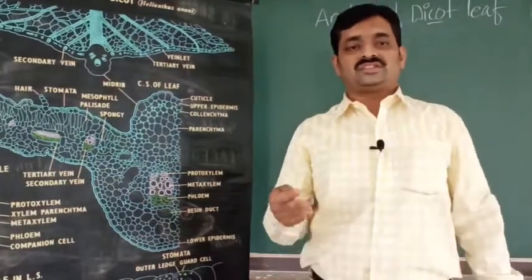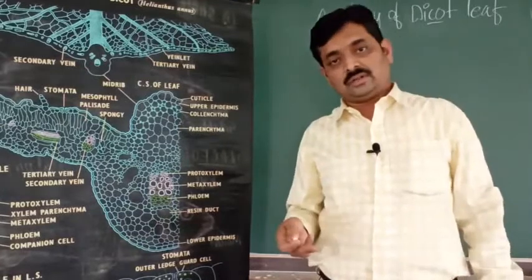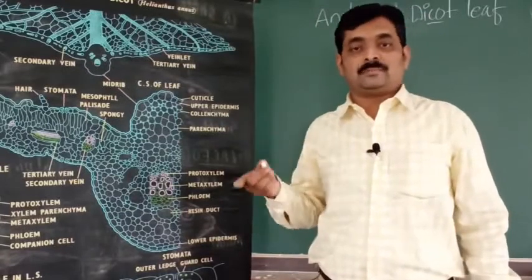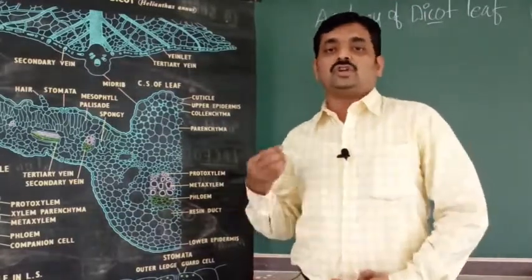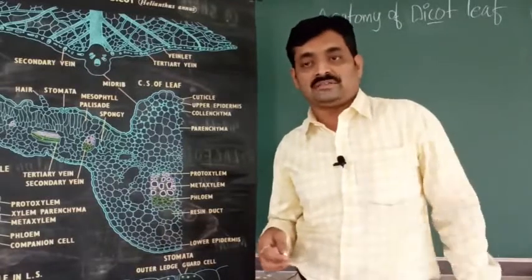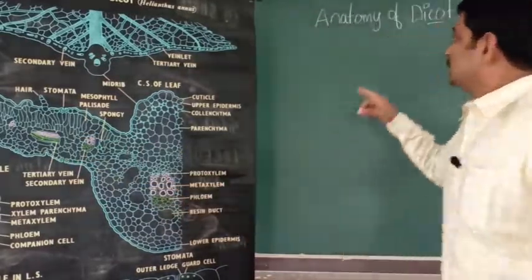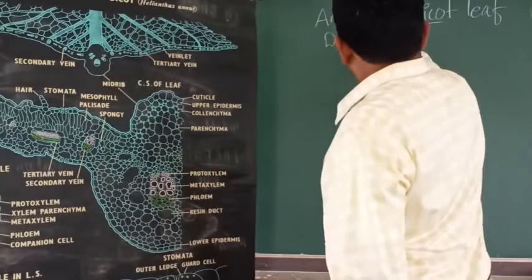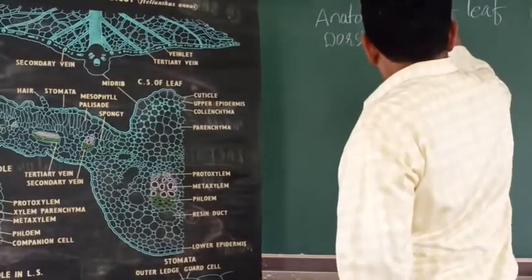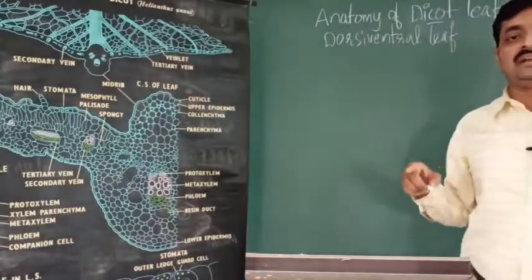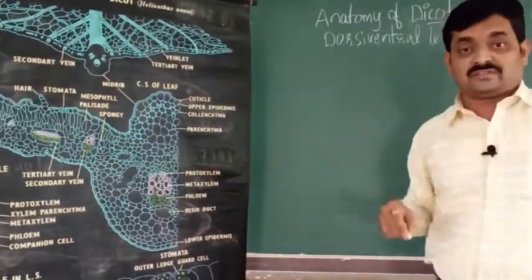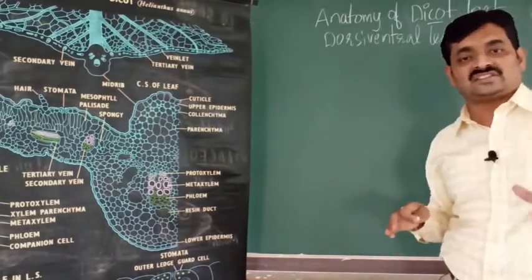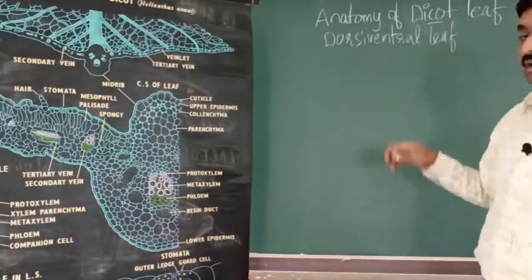Next we will consider the anatomy of dicot leaf. The example is sunflower. This dicot leaf is also called dorsiventral leaf because the two surfaces — upper and lower — are distinct; they are dissimilar.